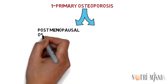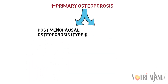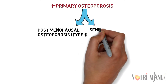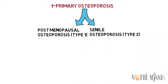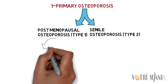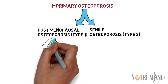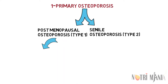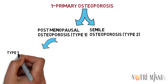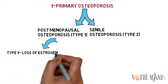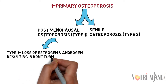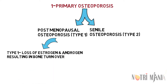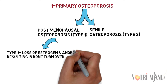Primary osteoporosis is the most common form of the disease and includes postmenopausal osteoporosis (Type 1) and senile osteoporosis (Type 2). Postmenopausal osteoporosis Type 1 is associated with the loss of estrogen and androgen, resulting in increased bone turnover with bone resorption exceeding bone formation and a predominant loss of trabecular bone compared with cortical bone.